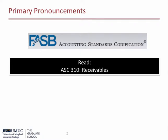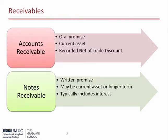Please read FASB Accounting Standard Codification 310 to learn the accounting standards for recording and reporting receivables. Companies sell goods and services on credit to entice shoppers to make purchases even when they do not have the cash on hand to pay for what they buy. Accounts receivables are an oral or verbal promise from the buyer to pay for goods and services purchased from the seller. Notes receivables are a written promise from the buyer to pay at a later date for goods and services purchased from the seller.